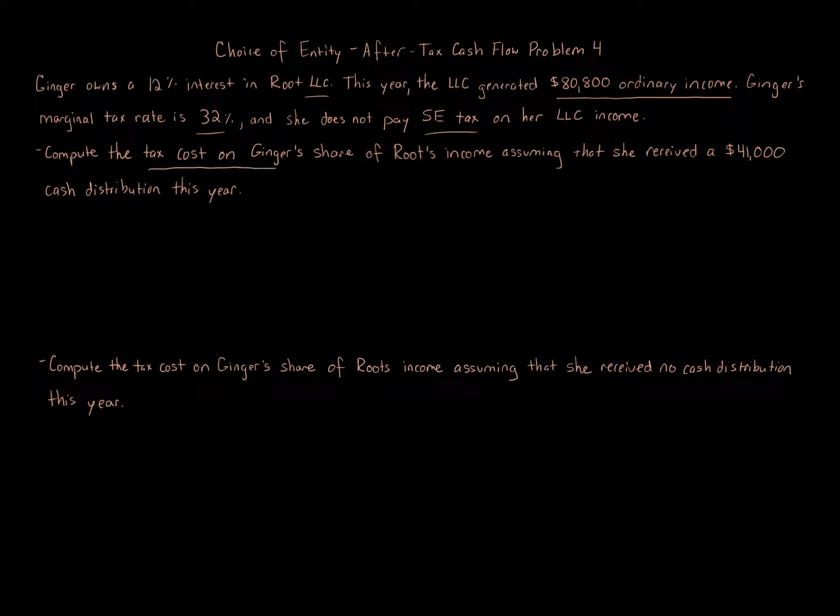We have two different questions, kind of variation one and variation two. When you have income, whether it's a C corporation, S corporation, or LLC, it's pretty much just get the amount of income and calculate it. If it's a corporation, the corporation is subject to tax—you don't divvy out the income. If it's a pass-through entity like an LLC, you allocate the income.